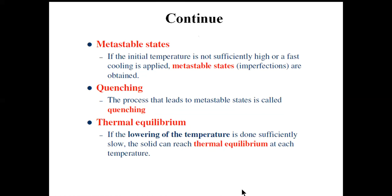Thermal equilibrium means that if the lowering of temperature is done in a sufficiently slow or controlled way, then at each temperature level the system can reach its thermal equilibrium condition — the state where atoms are arranged in a particular manner at that temperature.